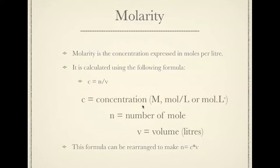Normally concentration is given to you in capital M or one of these types of units. They're interchangeable — they all just mean moles per litre. N is your number of moles, so you need to be able to calculate that — prior knowledge should cover calculating number of moles. V is volume, and it's always measured in litres, because you're doing concentration per litre.